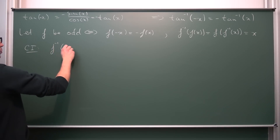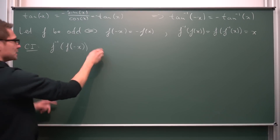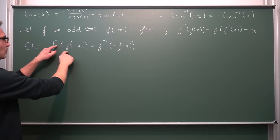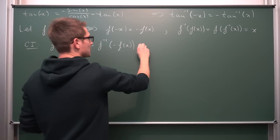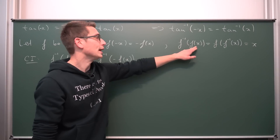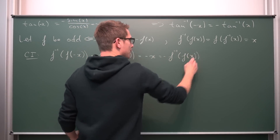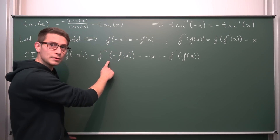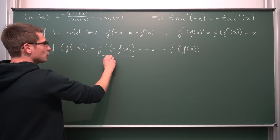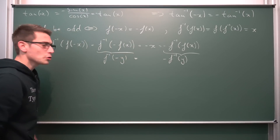We are going to start with the identity property but plug in negative x. Case one: we take f inverse of f of negative x. On one hand, since f is odd, we can bring the negative sign to the front, giving us f inverse of negative f of x. But we also know that f applied to f inverse gives back the argument, so this equals negative x. Then, rewriting x as f inverse of f of x, we get negative f inverse of f of x. This shows that the left inverse is indeed an odd function.